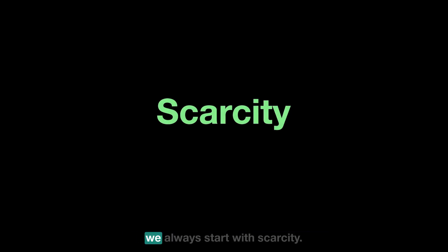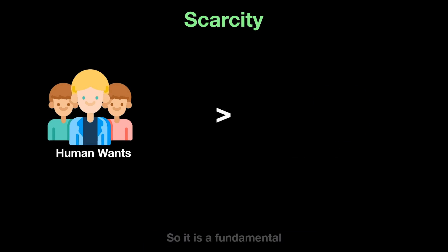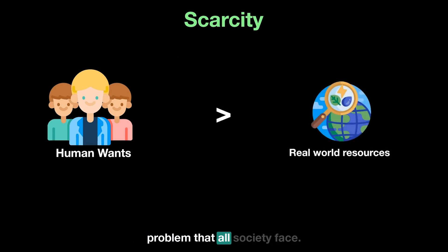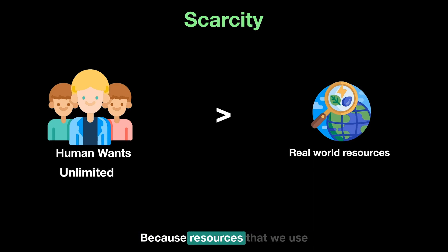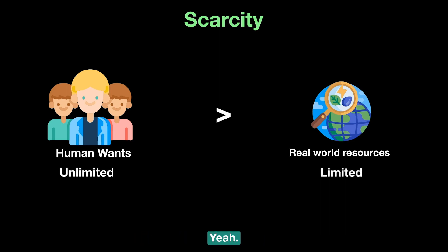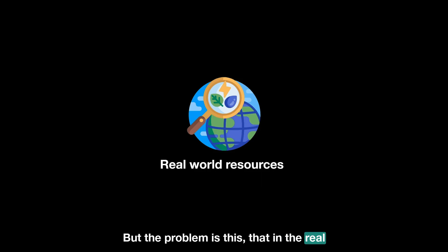To begin our discussion in economics, we always start with scarcity. Scarcity is simply the excess of human wants over what can actually be produced to fulfill these wants. It is a fundamental problem that all societies face, and the reason is simple: human wants are unlimited, while the means to fulfilling these wants are limited, because the resources we use to make goods are limited.